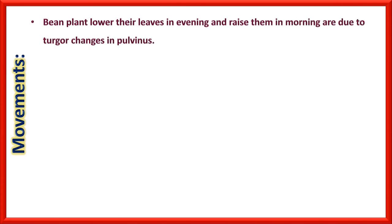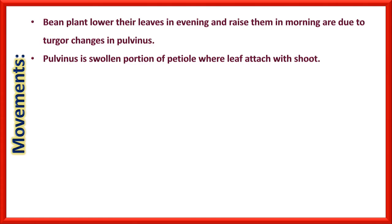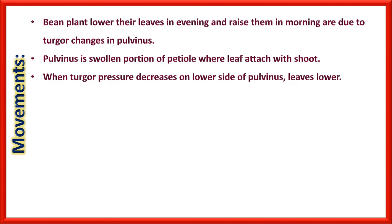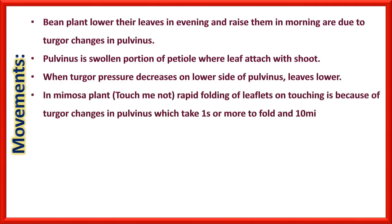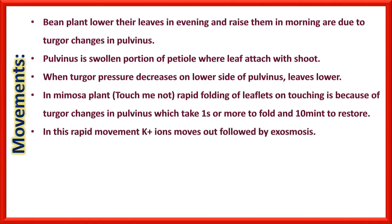Bean plants lower their leaves in the evening and raise them in the morning due to turgor changes in the pulvinus — the swollen portion of the petiole where the leaf attaches to the shoot. When turgor pressure decreases on the lower side of the pulvinus, leaves lower. In Mimosa (touch-me-not), rapid folding of leaflets on touching is due to sudden turgor changes in the pulvinus, taking one second to fold but ten minutes to restore due to re-accumulation of water and minerals.